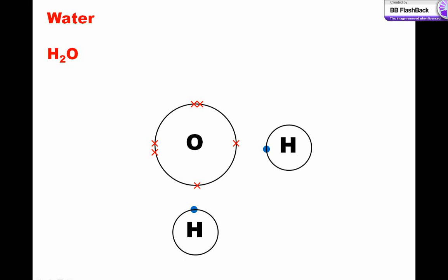Now let's look at water, H2O. Oxygen has 6 electrons in the outer shell, and forms 2 single covalent bonds with hydrogen.